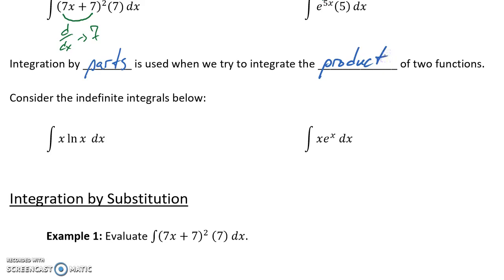So in the two problems that we have below, we can see that we have the integral, in this case, of a function x times another function natural log of x dx. So what we have is the product of these two functions, which would be our indicator that what we want to use is integration by parts.